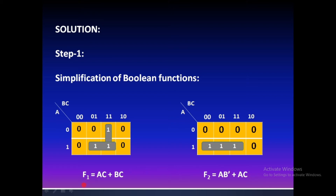We have AC as one product term and BC as another for F1. For F2, we have AB̄ and AC. Totally, the AND gate terms are four, but after eliminating the redundant term AC — which appears in both F1 and F2 — we are left with three unique product terms: AC, BC, and AB̄.